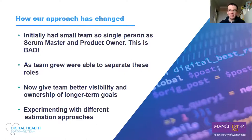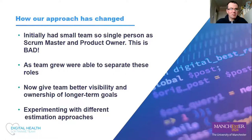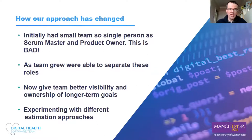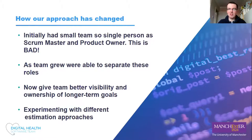We've also started experimenting with different estimation approaches. Historically we used technical story points — a relative measure of effort — and that's worked reasonably well. The downside is that near the end of a project, there are lots of little tasks, and you end up spending lots of time creating individual tickets to track them all. We're currently experimenting with just giving one or two developers a goal and saying: go to that goal, without worrying about having individual broken-down tickets for every small activity.